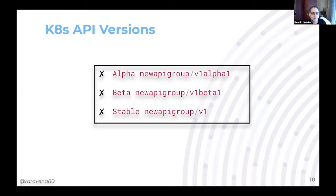One major problem is that Kubernetes API versions keep changing. When an object gets released, it starts under an alpha API group, then moves to beta when more stable, and finally reaches a stable GA API group like V1 or V2. They constantly cycle through different versions across Kubernetes releases.